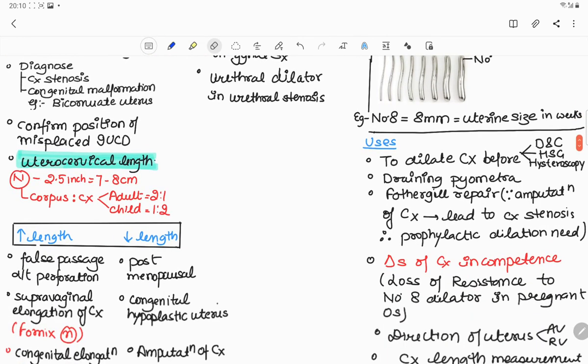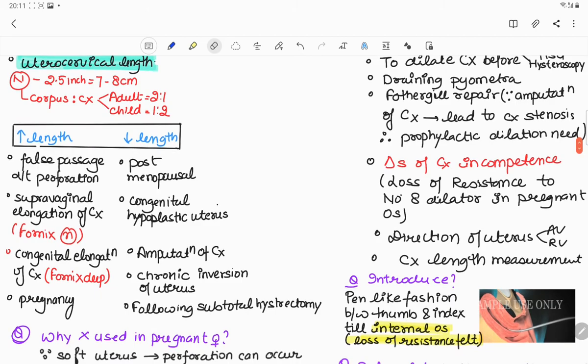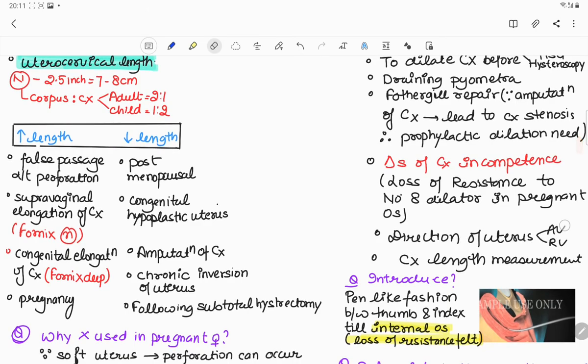It is used to dilate the cervix before any procedure, for example dilatation and curettage, hysterosalpingography, or hysteroscopy. To drain the pyometra, pus containing in the uterus, for Fothergill's repair. Because in Fothergill's repair, due to amputation of cervix, it leads to cervical stenosis, therefore prophylactic dilatation is required. Number four is to diagnose cervical incompetence. If we introduce the number 8 dilator in pregnant os and there is loss of resistance, means incompetence is there. Fifth use is to know the direction of uterus whether ante or retroverted and to measure only the cervical length.